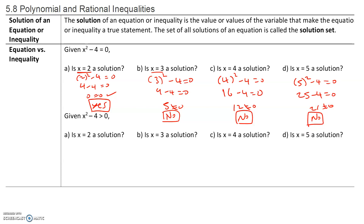Now, before we look at an inequality, what are the solutions of x squared minus 4 equals to 0? If we add 4 to both sides, we get x squared equals to 4. Then we square root both sides. Therefore, x equals to plus or minus 2. So 2 squared is 4, and 4 minus 4 is 0. Negative 2 squared is 4, and 4 minus 4 is also 0. So our solutions are going to be plus or minus 2.